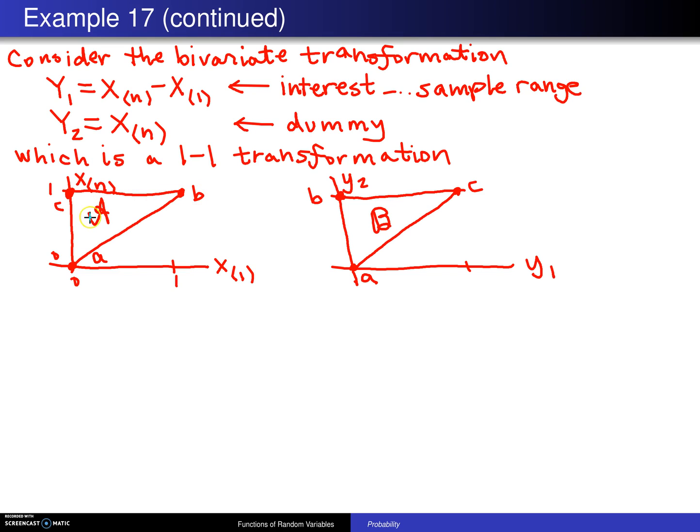At this point, you would go through the usual procedure of finding an inverse transformation, and then you would find a Jacobian. I'm going to leave the details as an exercise.